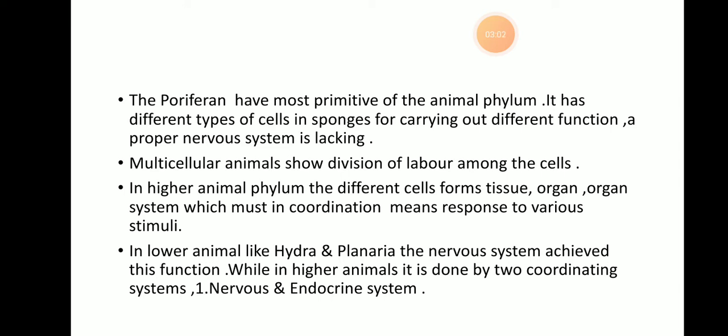In higher animals, the different cells form tissue, organ, and organ systems, which must coordinate — meaning response to various stimuli — by the coordination of two systems: the nervous system and the endocrine system. Those functions which are performed in the body of higher animals are controlled and coordinated by these two systems. In lower animals like hydra or planaria, the nervous system achieves this function alone.